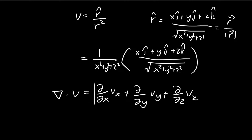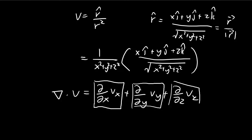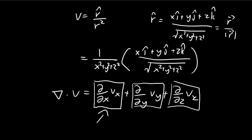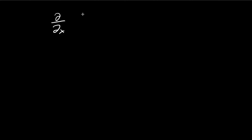So I'm just going to calculate this one term, and the result we get will be transferable to the other two terms as well. So to save us a bit of effort, I'll work on the x term first. The x component is equal to x divided by (x squared plus y squared plus z squared) to the power of 3/2.